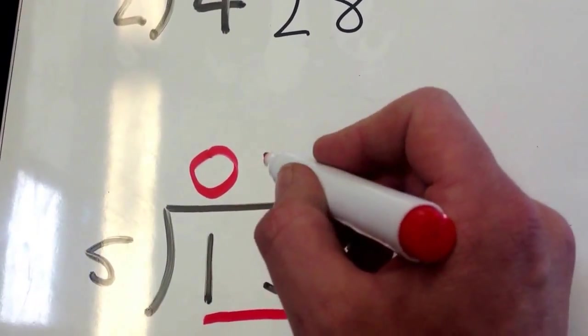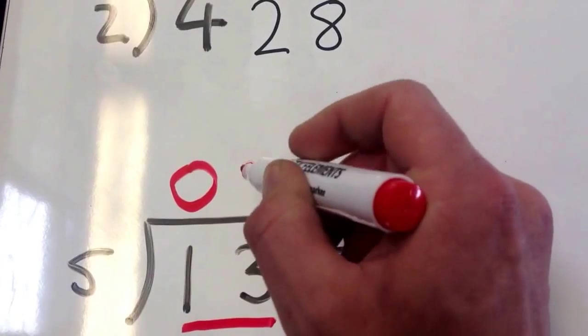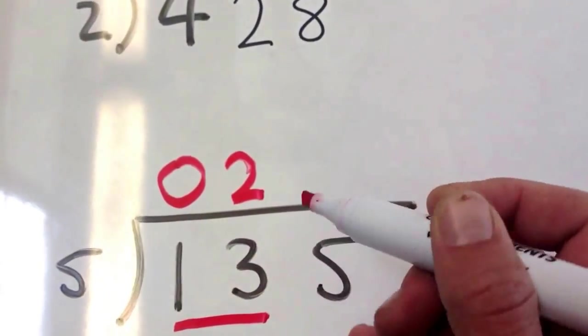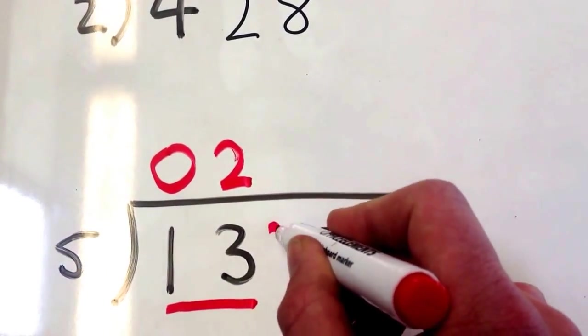So, 5 goes into 13 twice. And we've got 3 left over, and I'm going to put the 3 there.